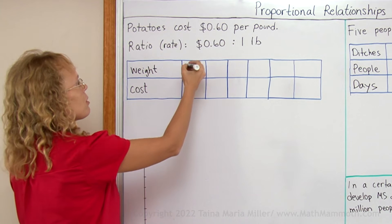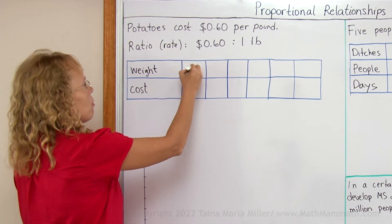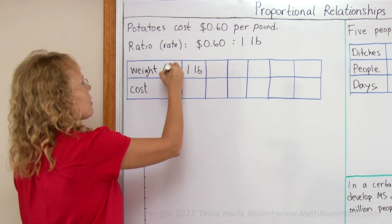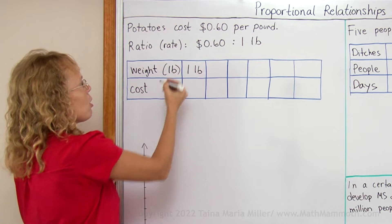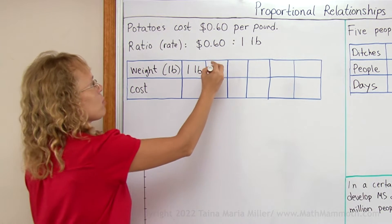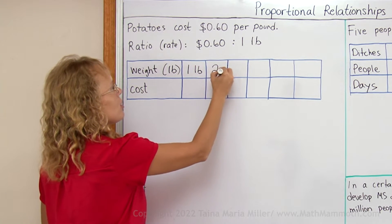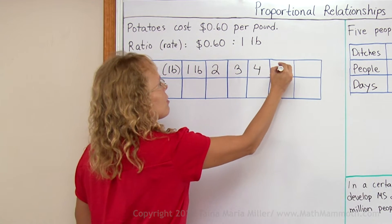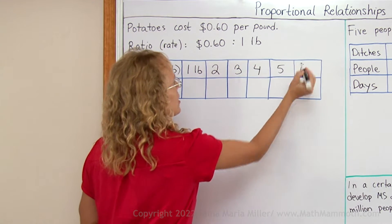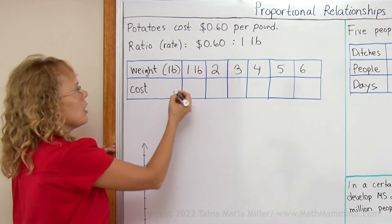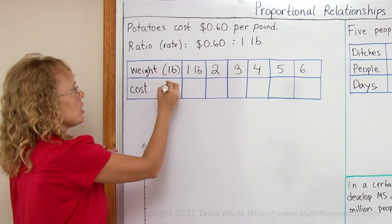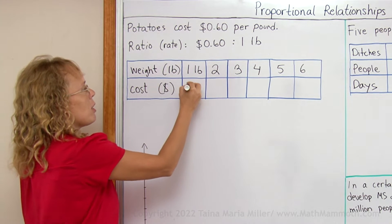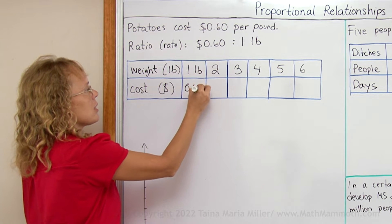The weight could be 1 pound here. The weight is always in pounds, so we just have 1, 2, 3, 4, 5, 6 and so on. And the cost in dollars for one pound is 60 cents.